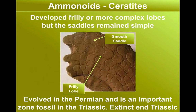A later development were the ceratites. These evolved in the Permian period and became an important zone fossil for the Triassic. By the end of the Triassic, they were extinct. But if you look at the suture line of these animals, you can see that it's a combination of a smooth, curved part of the suture we call the saddle, and the lower part of the suture is starting to develop more complexity and become more frilly.